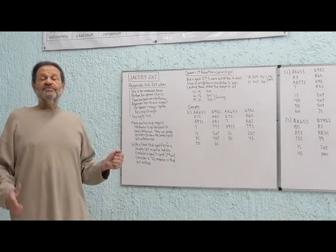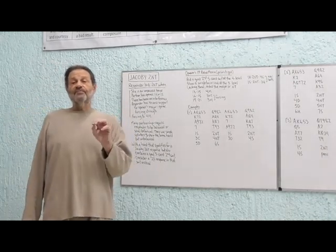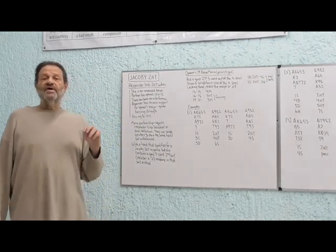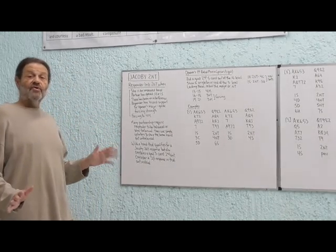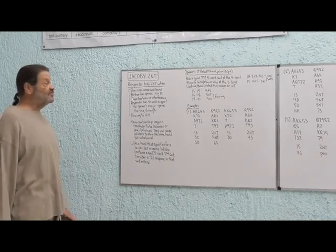And the hands that would be semi-balanced would be five-four-two-two, six-three-two-two, and seven-two-two-two. All those hands have two or three doubletons, but no singleton or void. So they're semi-balanced.